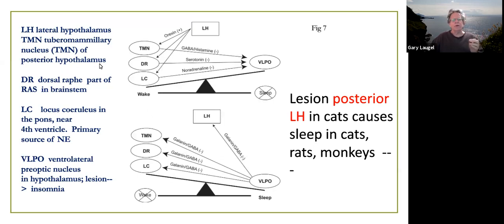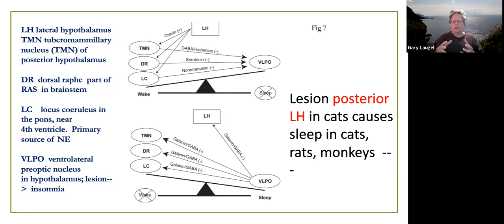A couple of other areas: the dorsal raphe, which is part of the reticular system in the brainstem, and the locus coeruleus — the LC area in the pons. All of these areas are near the base of the brain. And the very famous VLPO — the ventrolateral preoptic nucleus, also in the hypothalamus.